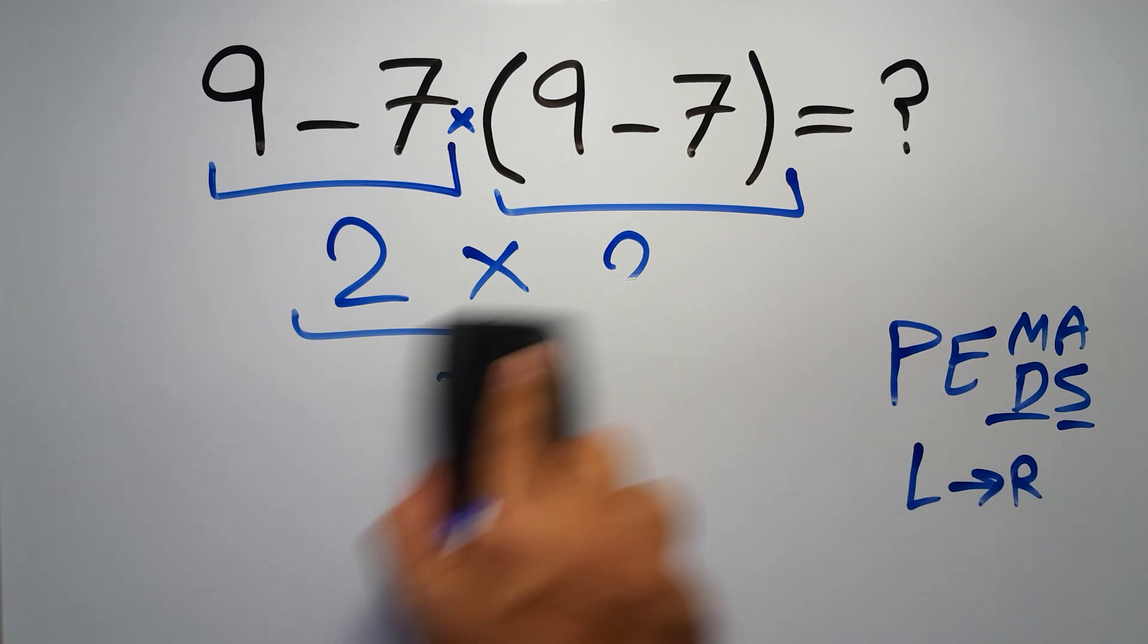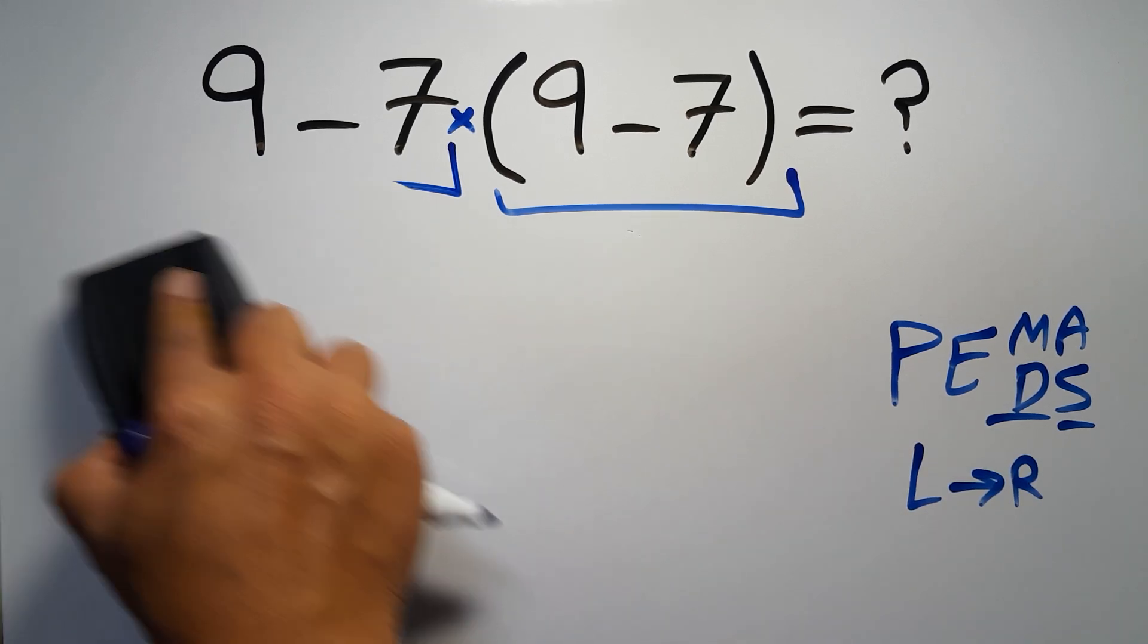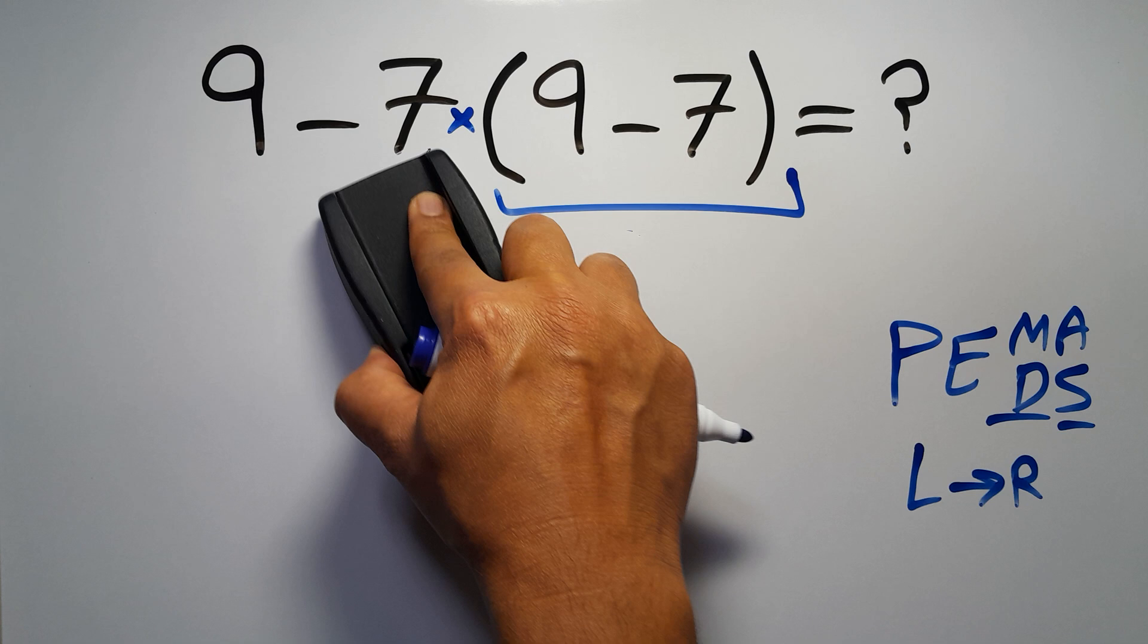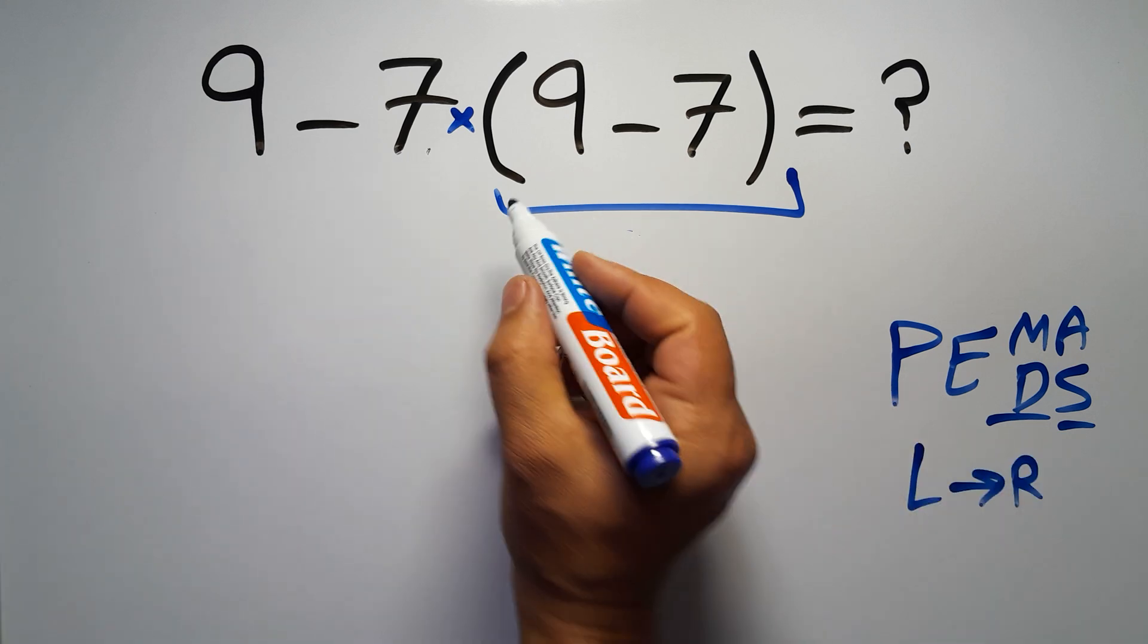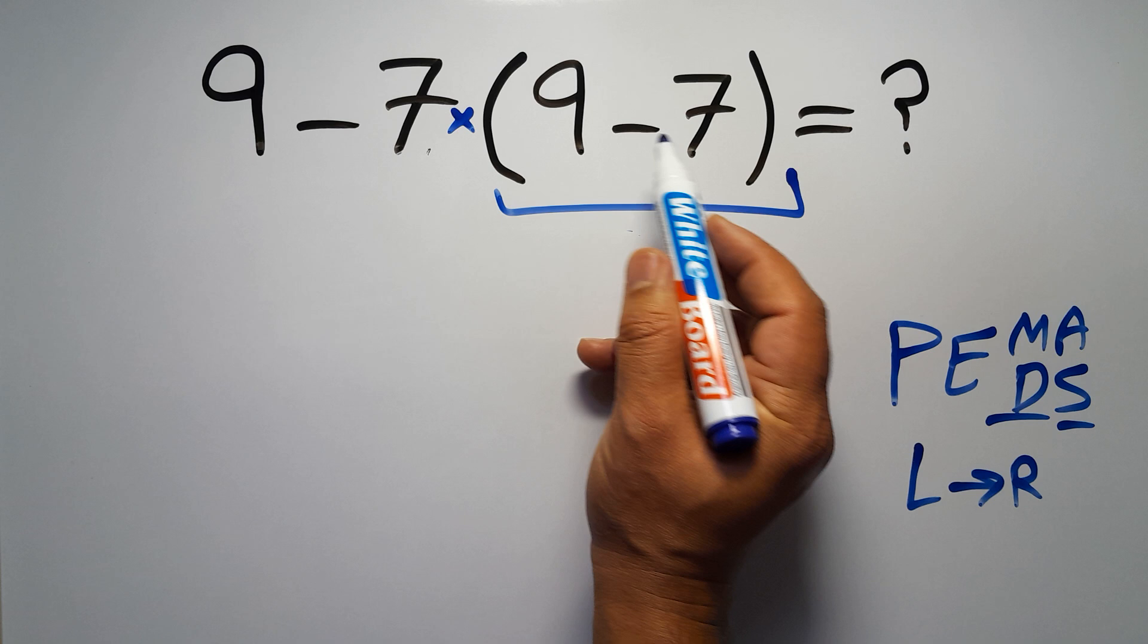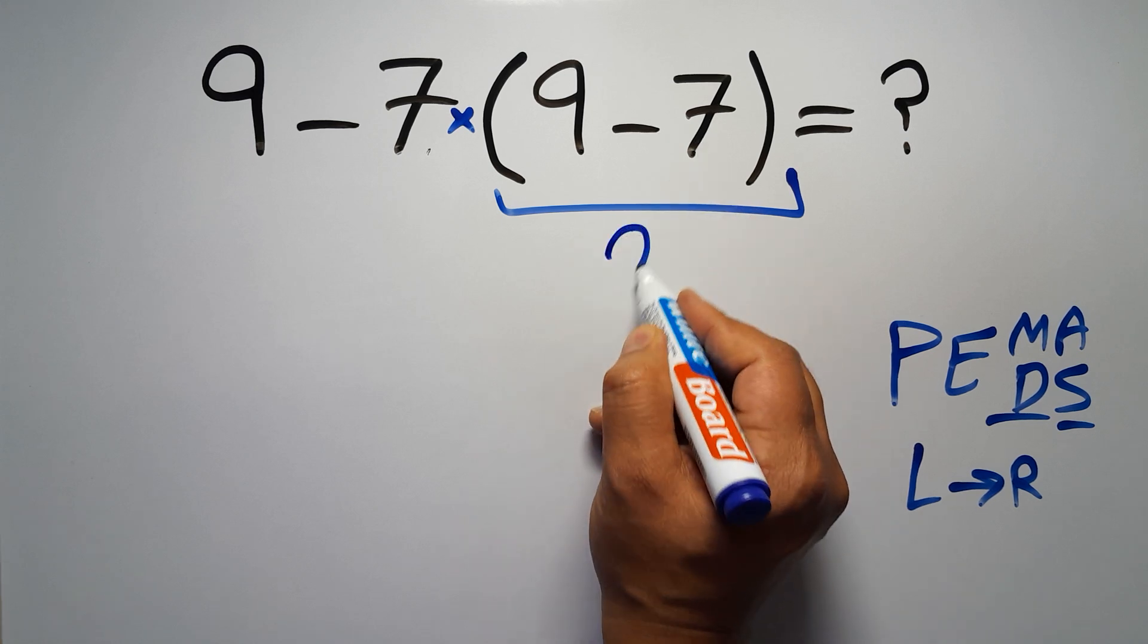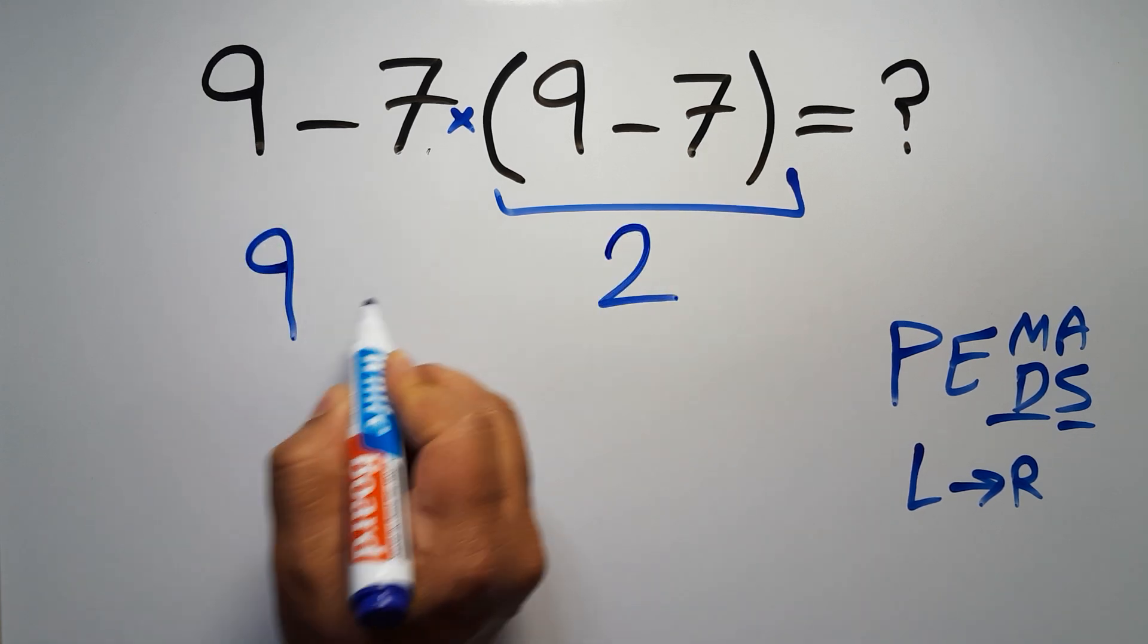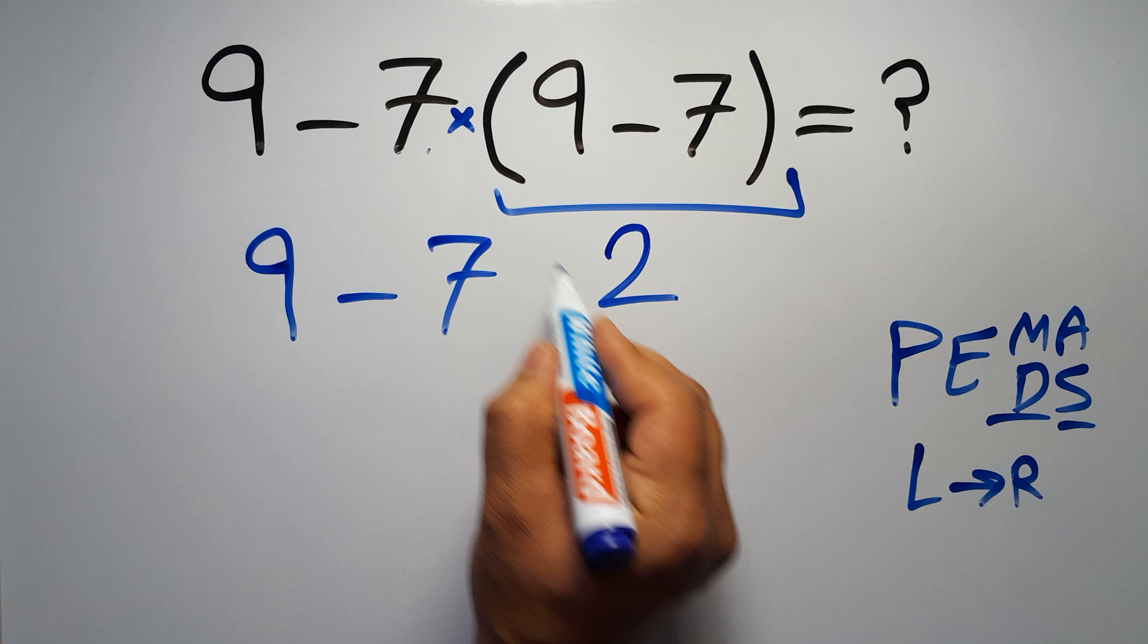So first we have to do this parentheses. Inside this parentheses we have 9 minus 7, which gives us 2, so 9 minus 7 times 2.